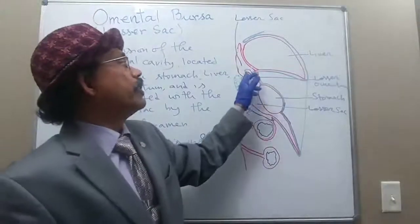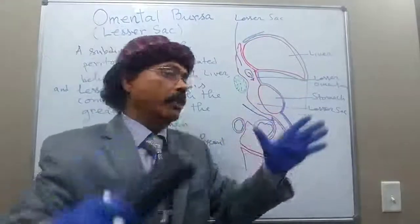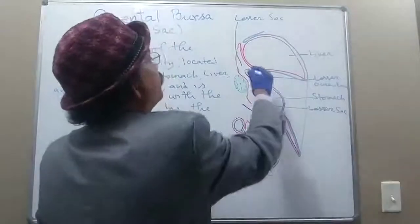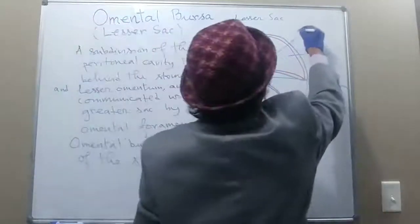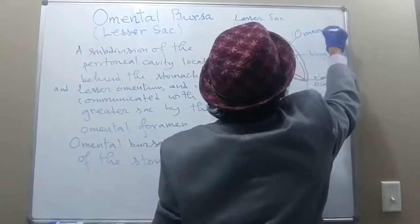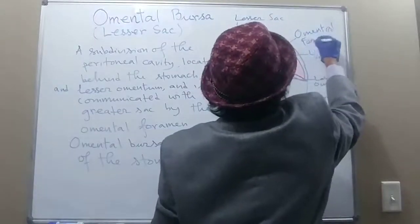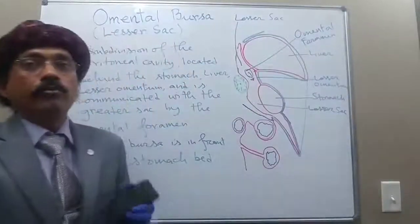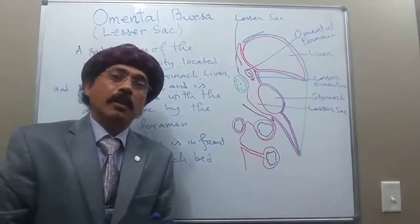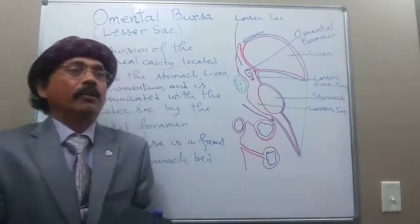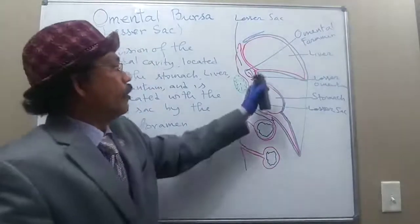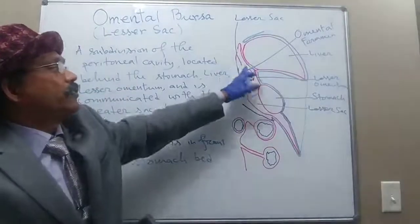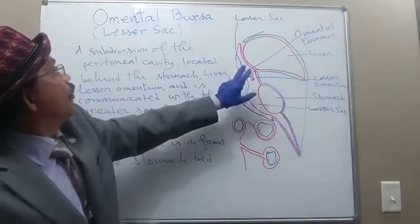The lesser sac is communicated to the greater sac, the general peritoneal cavity, by means of the omental foramen — also known as the foramen of Winslow, or aditus to the lesser sac. We have now covered the anterior and posterior boundaries.